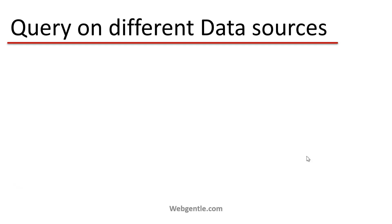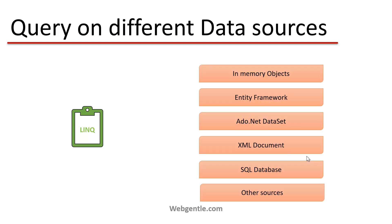So what is the meaning of querying different data sources? Suppose you have your LINQ query in your program and you have multiple data sources — this may be your in-memory objects, this may be Entity Framework, this may be an ADO.NET dataset, an XML document, your SQL database, or any other data source.